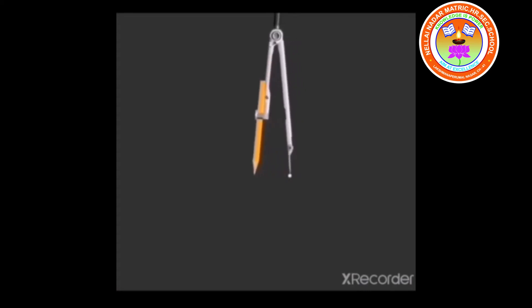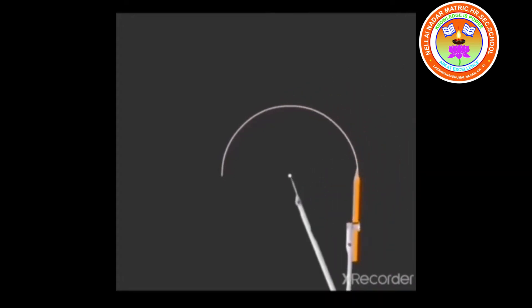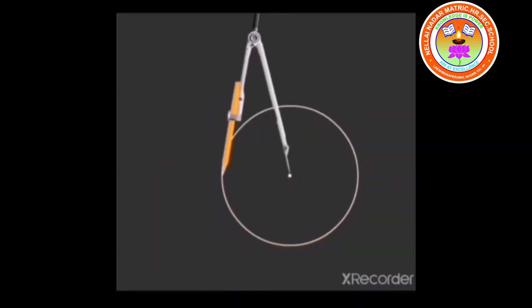Step 3: Move the pencil arm around keeping the metal arm fixed. Hey, look, we have drawn a circle.